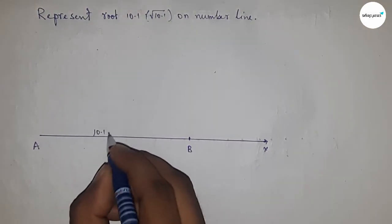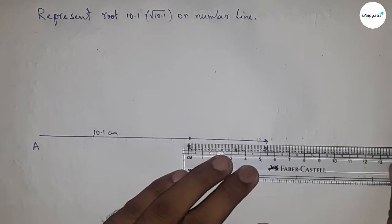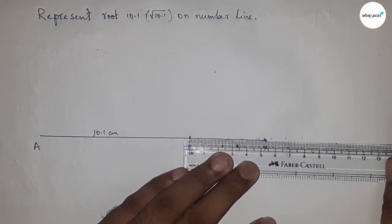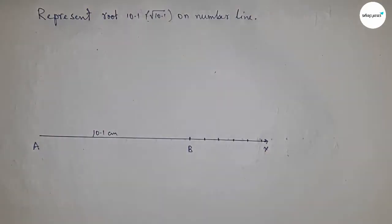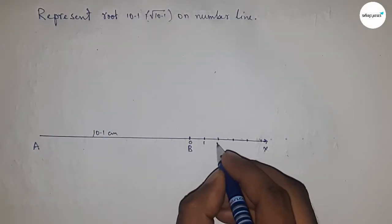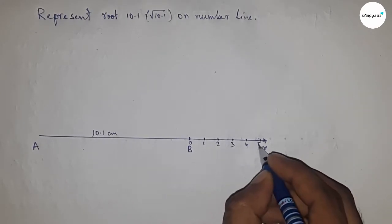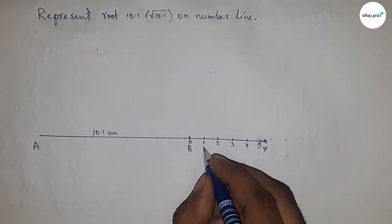This is 10.1 centimeter and taking this is B point, so AB is 10.1 centimeter. Now marking the numbers on the line from B to X by using scale. So this is 0, 1, 2, 3, 4, 5, and so on, and this is C point.